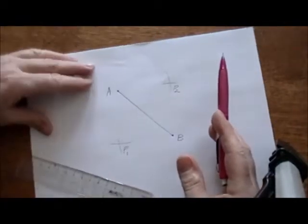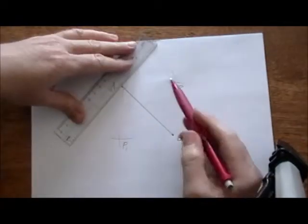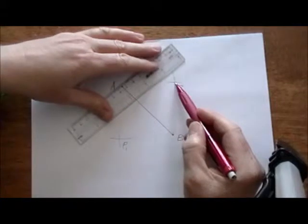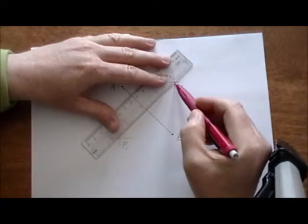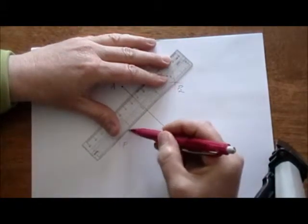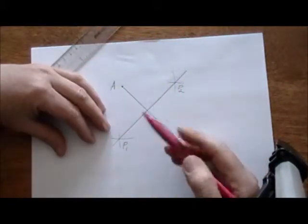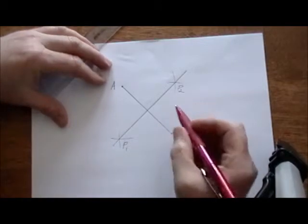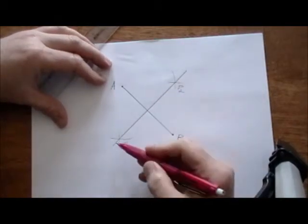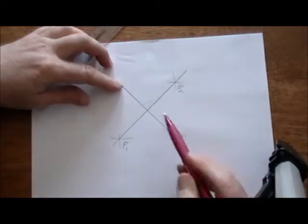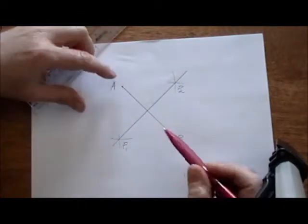So now we can connect those two points, P1 and P2, with our straight edge. So now we have a line that is our perpendicular bisector because we have these equidistant points from the endpoints.